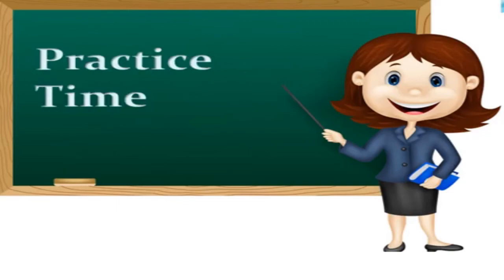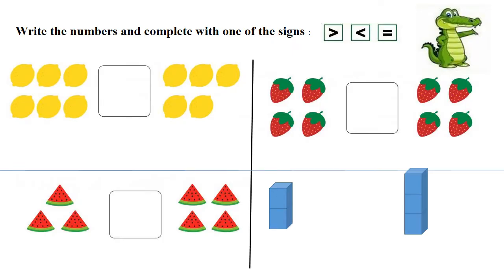It's practice time now. Write the numbers and complete with one of the signs. Let's count together the lemons. One, two, three, four, five, six. We have six lemons.